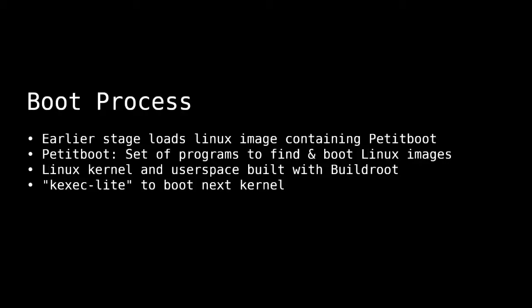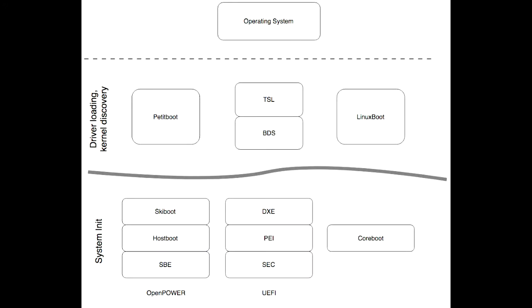Petitboot is an approach to an open bootloader that loads a small Linux image — in our case from flash — and within that image is a set of programs and utilities to find and boot Linux kernels and user space. All the tools are built with Buildroot, nothing special, and we use the kexec mechanism to boot into the next kernel. Like Linux boot, Petitboot covers that whole section rather than just part of it like GRUB.